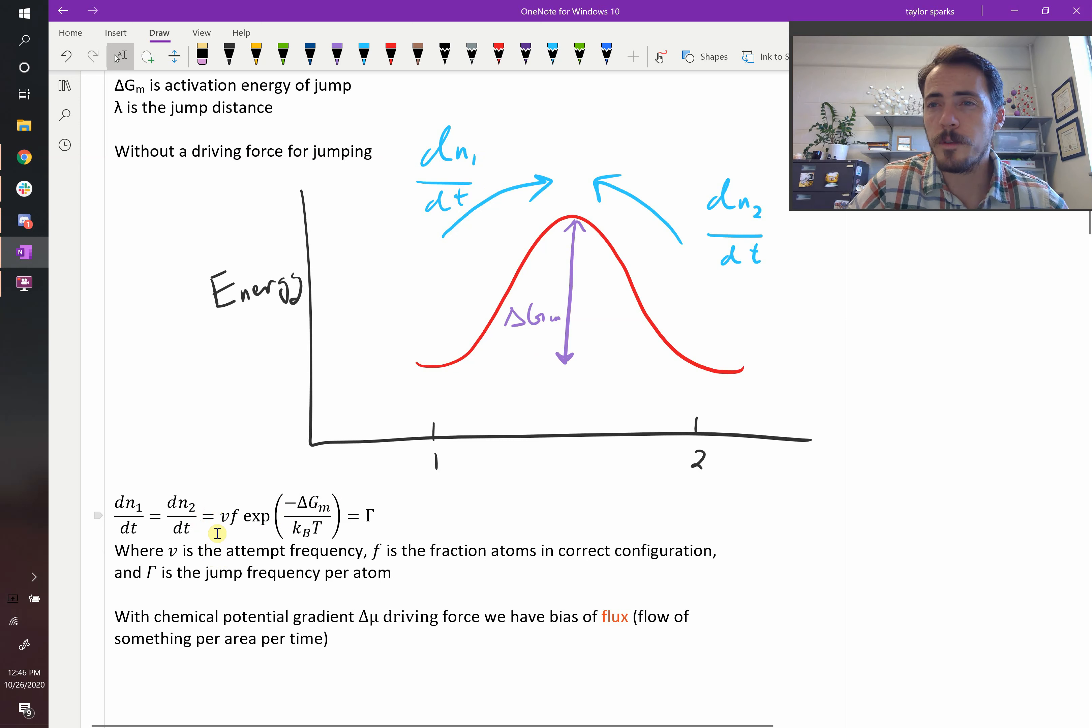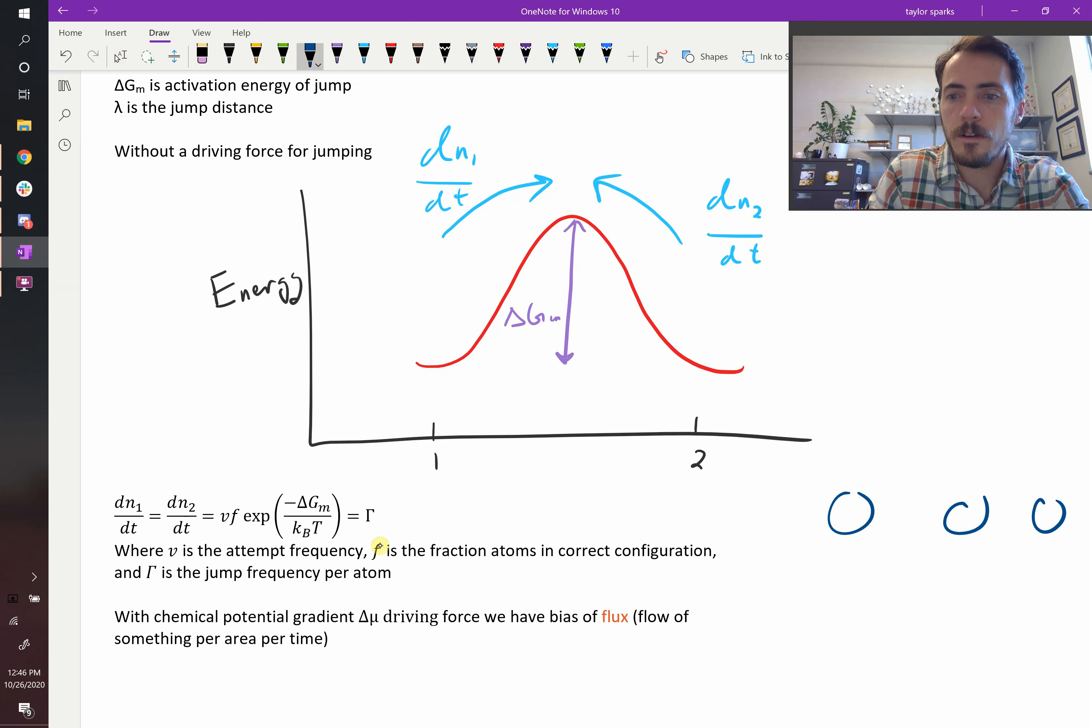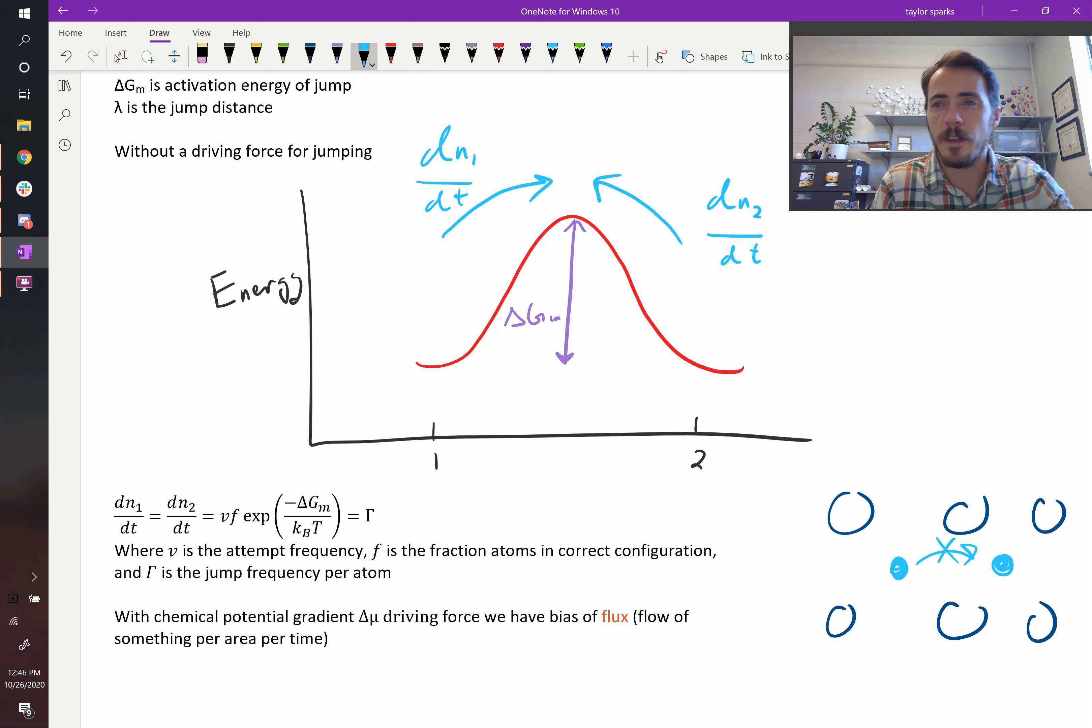We could actually write out mathematically what these two fluxes are equal to. dN1/dt is equal to dN2/dt if this is a flat line between them, and that's going to be equal to v times f times the exponential of our negative activation energy over thermal energy. v is going to be the attempt frequency - the vibrational frequency. f is going to be the fraction of atoms in the correct configuration. If this already has an atom there, then it can't go there, that's forbidden because that spot's taken. So f is the fraction of atoms in the correct configuration for the direction that you're considering. And then lambda is going to be your jump frequency per atom.